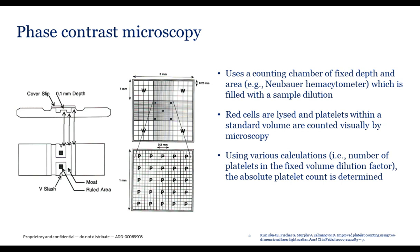Phase contrast microscopy was the standard reference method by the ICSH for many years. It involves using a Neubauer chamber — a graduated chamber filled with sample solution. When looking through the microscopic objective, you can see the grid lines within the Neubauer chamber, with five distinct regions used to count platelets. The red cells are lysed with the diluent, the chamber is charged, and the microscopist counts all five windows, then uses various calculations to determine the absolute platelet count.